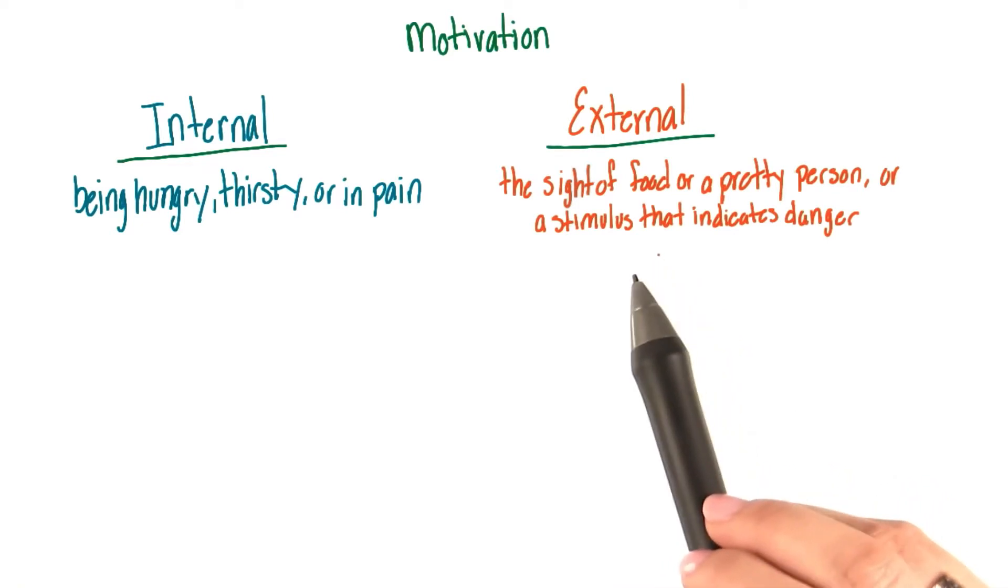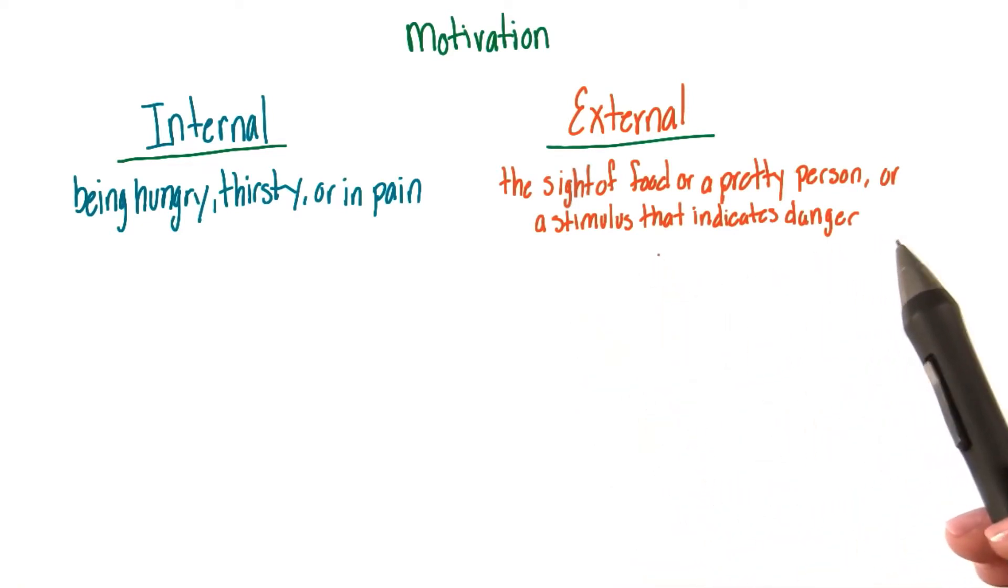On the other hand, the external factors can include things such as the sight of food or the sight of a pretty person, or a stimulus that indicates danger.